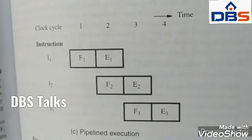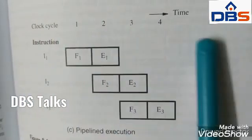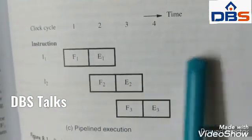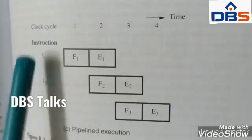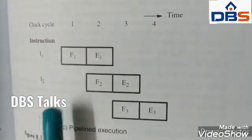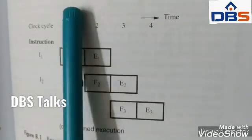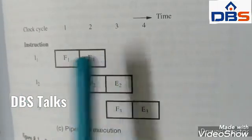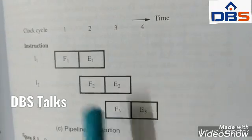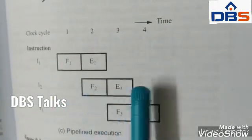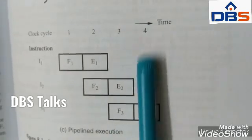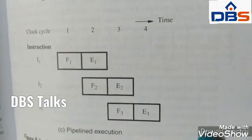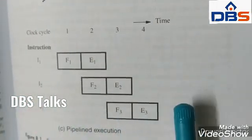Coming to pipelined execution — here the clock cycles are 1, 2, 3, 4. There are three different instructions. In clock cycle 1, the first instruction starts fetching. In the next clock cycle, it moves to execution while the second is fetching. In clock cycle 4, instruction 3 completes execution. This pipeline execution improves the performance of the processor.